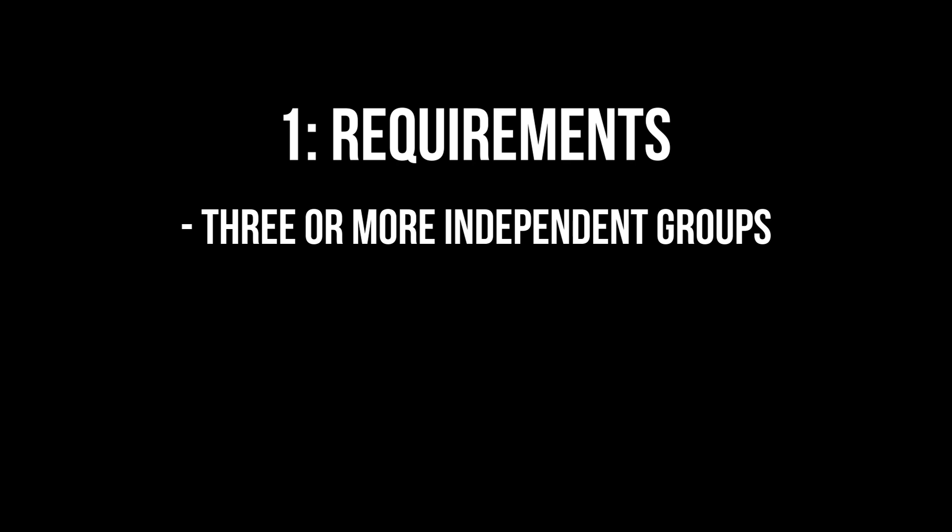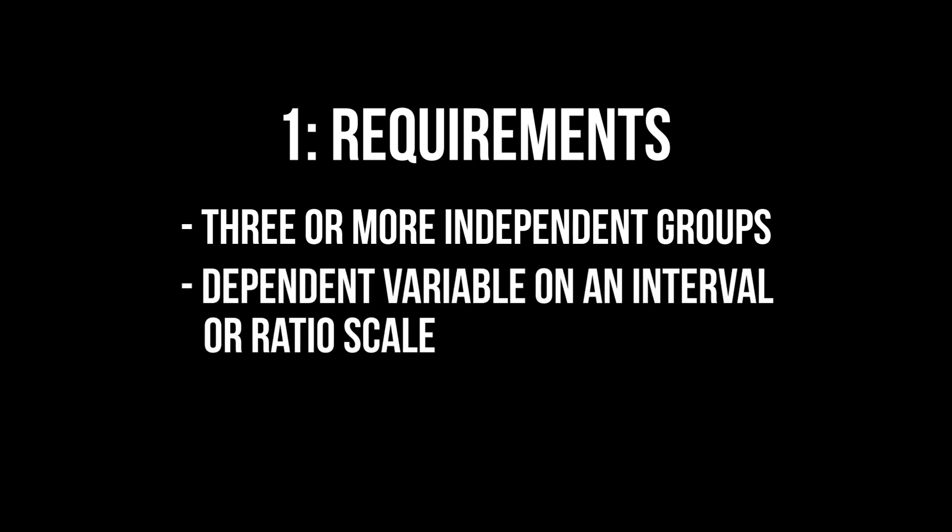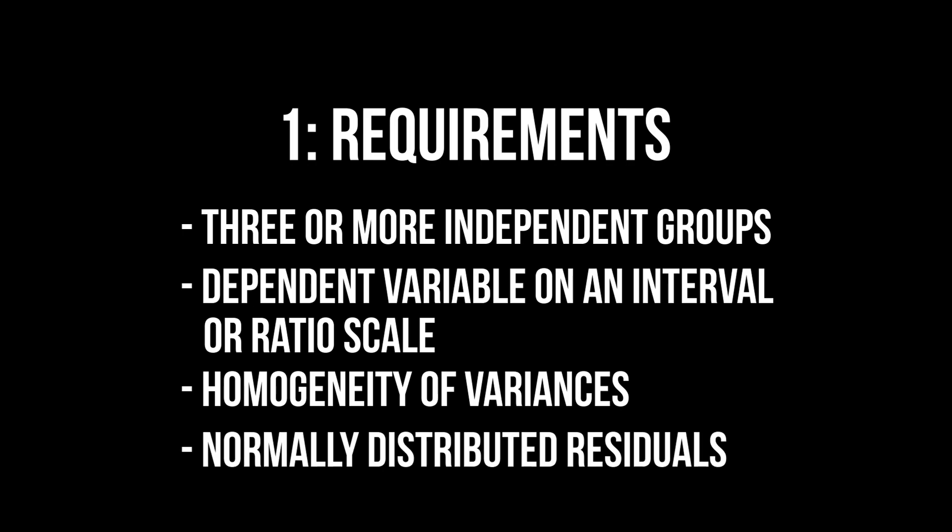The requirements for the one-way ANOVA are the following: three or more independent groups and a dependent variable on the interval or ratio scale, homogeneous variances across groups in case you have unequal group sizes, and normally distributed residuals. The last one is shown in a separate video to keep this one as concise as possible.